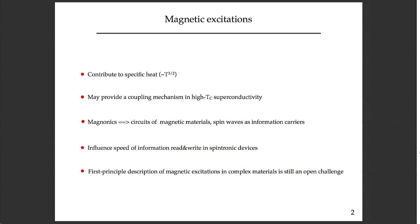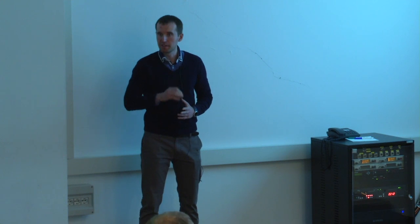What is the motivation to study magnons? Magnons appear in different places. They contribute to the specific heat, they may provide the coupling mechanism for high temperature superconductivity, and circuits of magnetic materials because spin waves can be used to carry information. Magnons can influence the speed of reading and writing information in spintronic devices. And finally, the first principle description of magnetic excitations for complex materials is still a challenge. For simple systems like bulk iron and bulk nickel, there are methods. But if you try to study very complex systems like surfaces with spin-orbit coupling, it really becomes a challenge. So we would like to have a new method to address those problems.